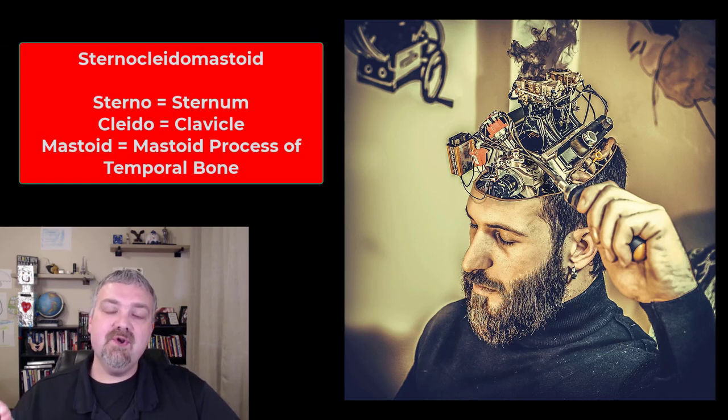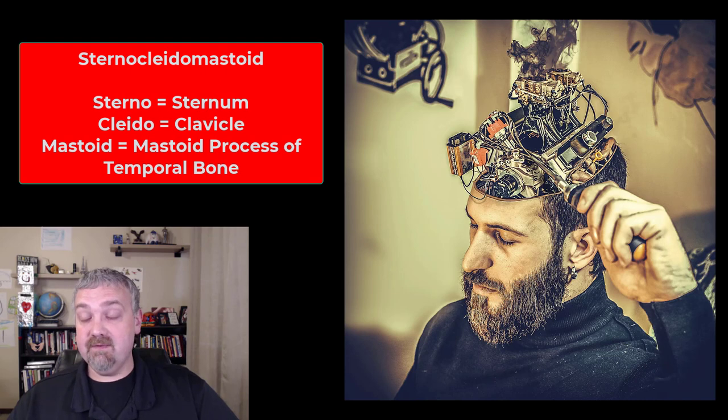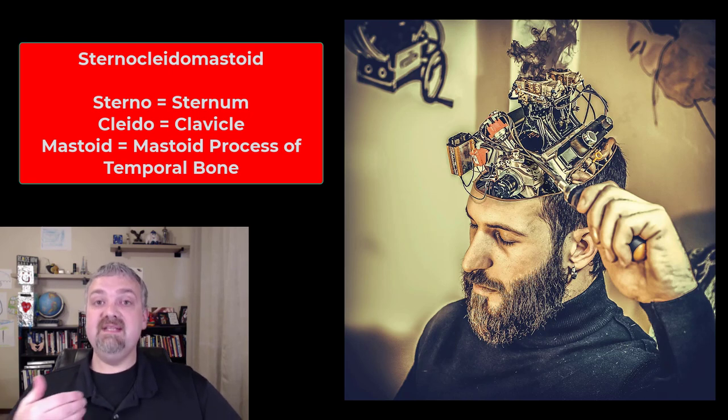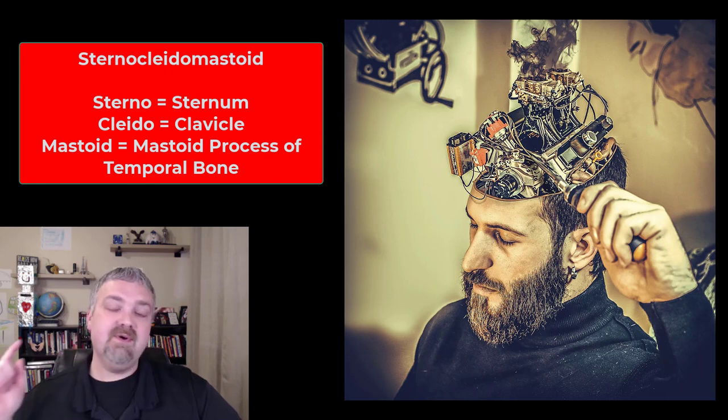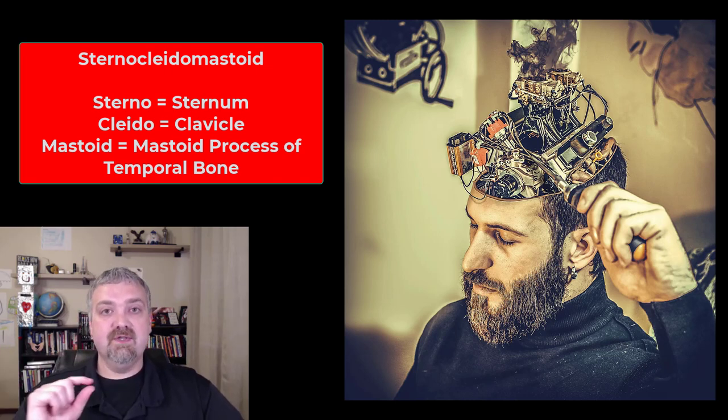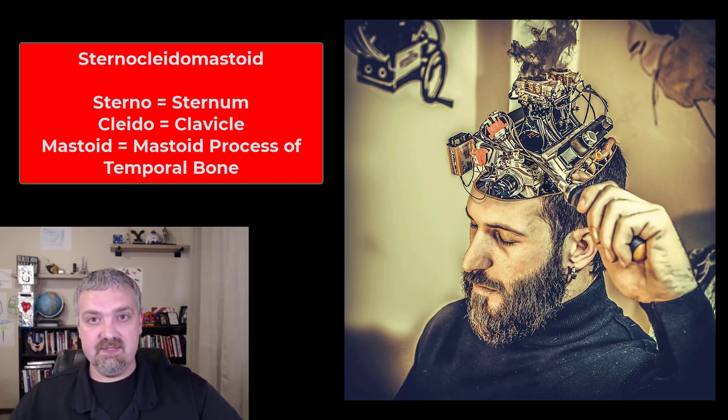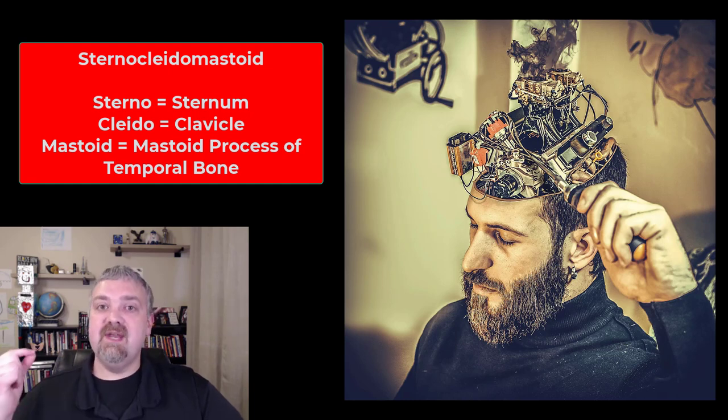My favorite example has always been the sternocleidomastoid muscle. That sounds like complete gibberish until you understand the medical terminology behind it. Sterno means sternum, kleido means clavicle, and mastoid is the mastoid process of your temporal bone. So the sternocleidomastoid muscle tells you exactly where it starts and where it ends.